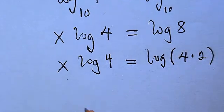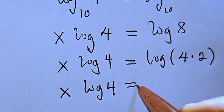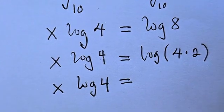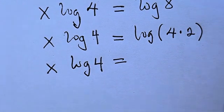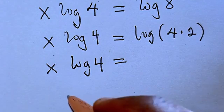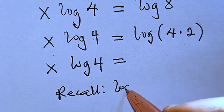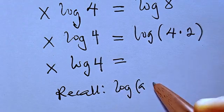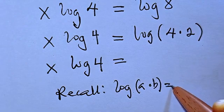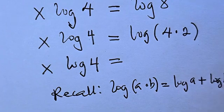We are going to have x log 4 equals. Now from the law of logarithm, so remember or let's recall that when you have log a multiplied by b, this will give us log a plus log b.